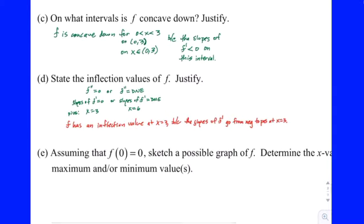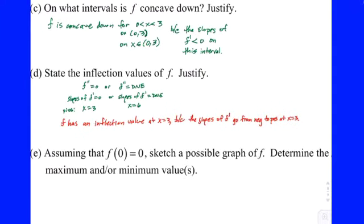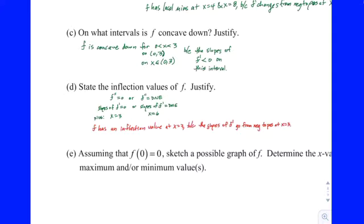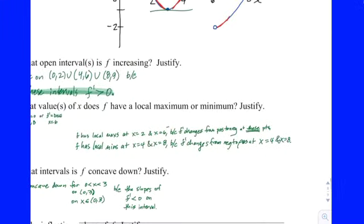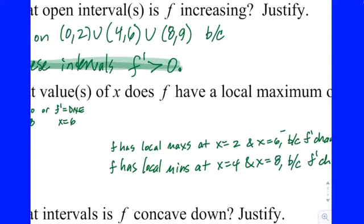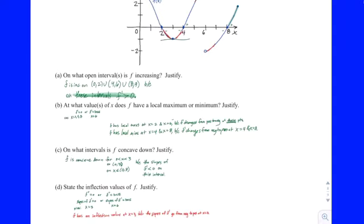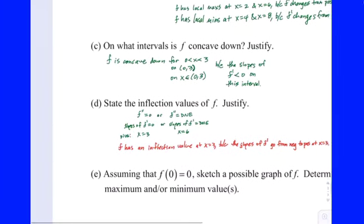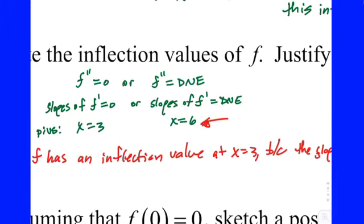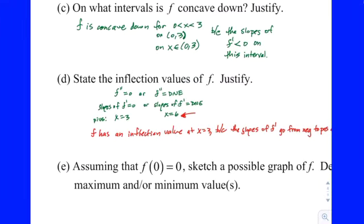At 6, the slope to the left of 6 is a positive number — it's increasing — and to the right of 6, the slope is also a positive number. So there's no sign change in the slope there, so it's not going to be an inflection value. Now you have to decide: do you need to address the one that doesn't work, or can you just walk away? Based on the instructions — since it just says 'state the inflection values' — you could just walk away. The wording 'at each possible inflection value, determine if f has an inflection value or not' would require you to address all of them.